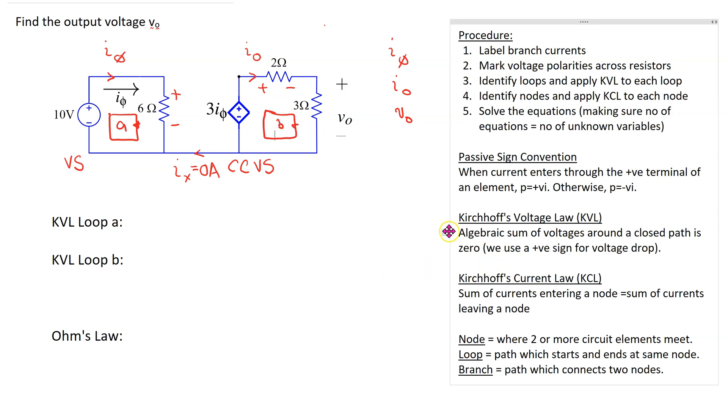Recall that Kirchhoff's voltage law states that the algebraic sum of voltages around a closed path is zero, and we use a positive sign for voltage drops following passive sign convention. So applying Kirchhoff's voltage law to loop A, we can start at the independent voltage source. We can see that we are going from minus to plus, this is a voltage rise, so the first term is minus 10.